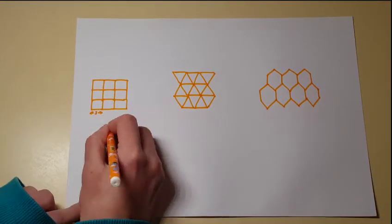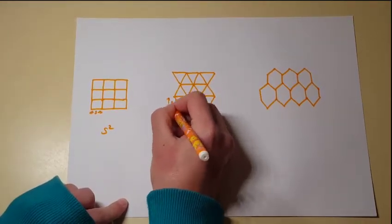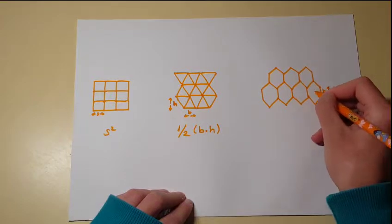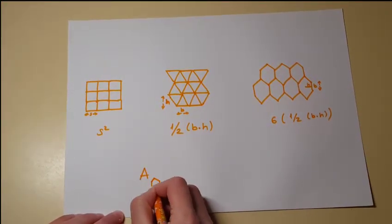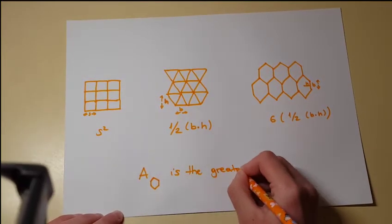And if you calculate the area of the triangle, square and the hexagon, you can see the area of the hexagon is actually greater. So bees could store more honey in a hexagonal cell and would need less wax to build the walls.